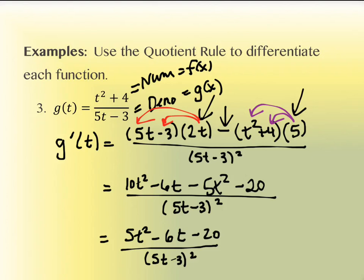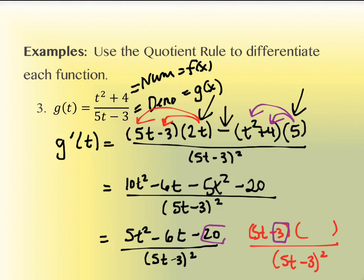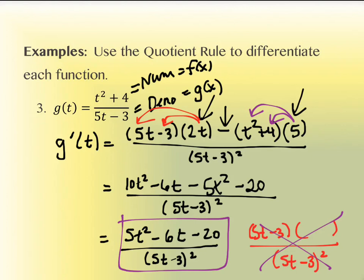At this point, we need to check if the numerator will factor to include (5t − 3), which would allow it to reduce with the denominator. The answer here is no — the constant at the end is 20, and nothing times 3 (a whole number) equals 20. So this won't factor. This is our final answer, and we don't need to do any factoring on this particular one. There are cases where it will factor, and you'd reduce at that point, but this one doesn't.